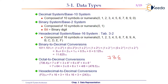In the octal number system, the first digit weight is 8^0, second digit weight is 8^1, and third digit weight is 8^2. We multiply each digit by its respective weight and add the results. So 6 × 8^0, 3 × 8^1, and 7 × 8^2.